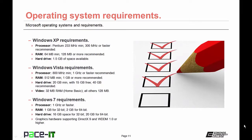As time marched on, so did the requirements. When Windows 7 came out, Microsoft required the processor to run at least 1 GHz. For RAM, a 32-bit system needed at least 1 GB, and a 64-bit system needed 2 GB — though doubling those is recommended. For hard drive space, Windows 7 required 16 GB for a 32-bit installation and 20 GB for a 64-bit installation. Microsoft upped the ante on video too — now you needed the video card to support DirectX 9 and WDDM 1.0 or higher.